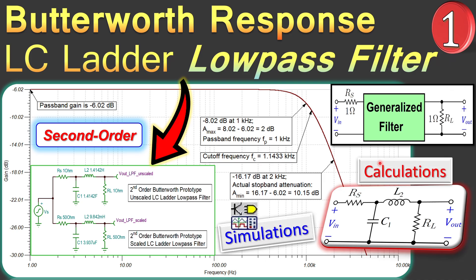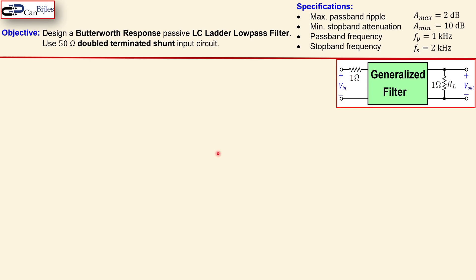We will work through calculations step by step and also verify these in SPICE simulations. The objective is the design of a Butterworth response passive LC ladder low pass filter. It is passive — only passive components — and it must be a 50 ohm double terminated shunt input circuit. The generalized filter block has a normalized source resistance Rs of one ohm and a normalized load also of one ohm.